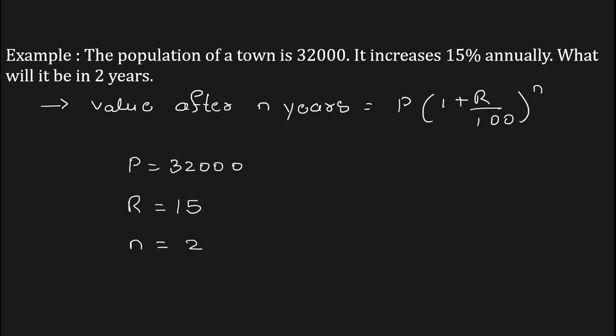Since we have the value of P, R, and n, substitute them in the formula. We will be getting 32,000 times (1 + 15/100) to the power of 2. Now solve this: 32,000 times (115/100) squared.